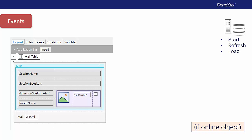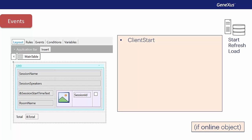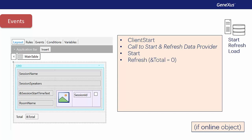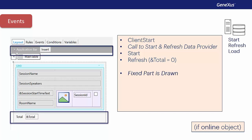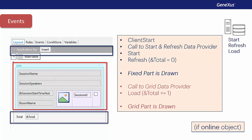Here we can see an outline of what we've done. When we opened the panel, the client's start event was executed, and there was a call to the data provider of the fixed part, which in our case does not recover anything from the server. Then the start event was executed, followed by refresh with the initialization of the total variable, and then the fixed part was drawn. At that point, the value of the total variable was zero. Then the data provider associated with the grid was called and the load event was executed — here we increase the value of total — but the total variable was already drawn in the layout with a value of zero. Then the grid is drawn. Note that this is the reason for the problem: the order in which the various parts of the object are drawn, not the fact that refresh and load events are separated into two independent data providers.